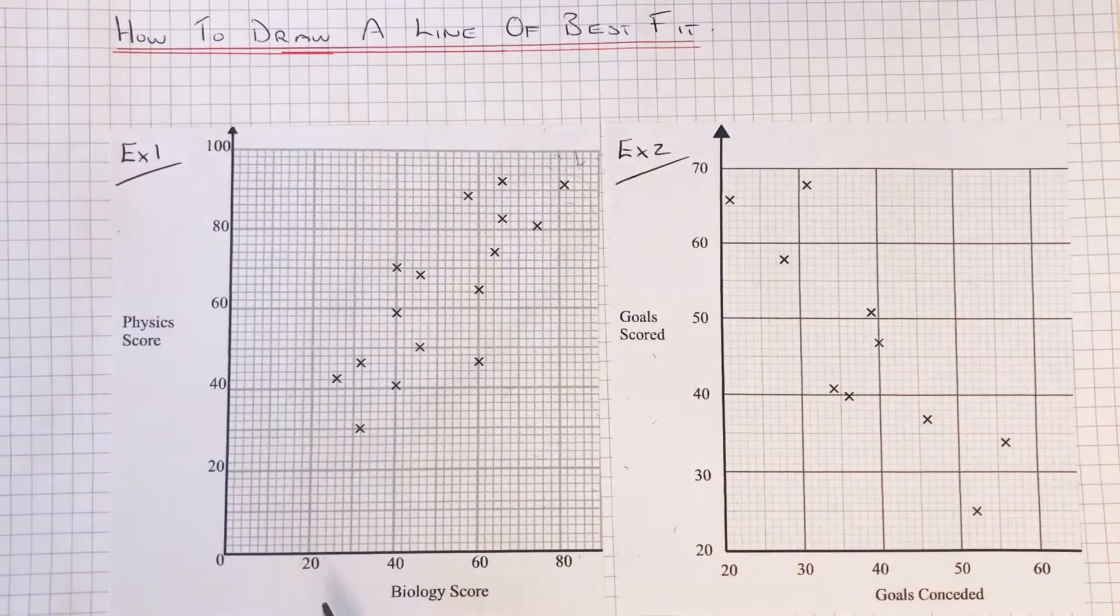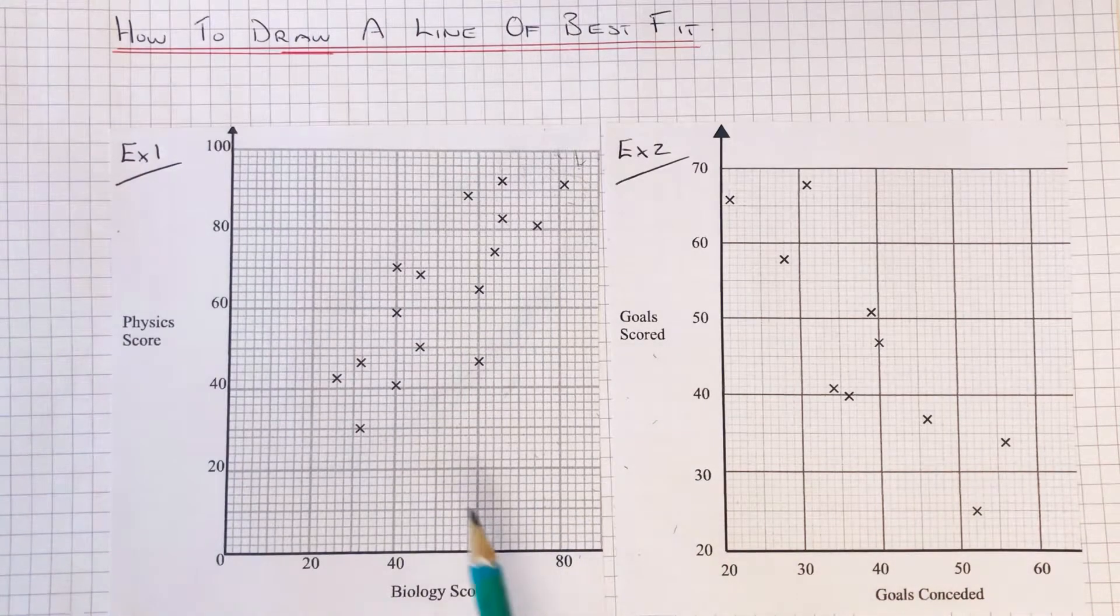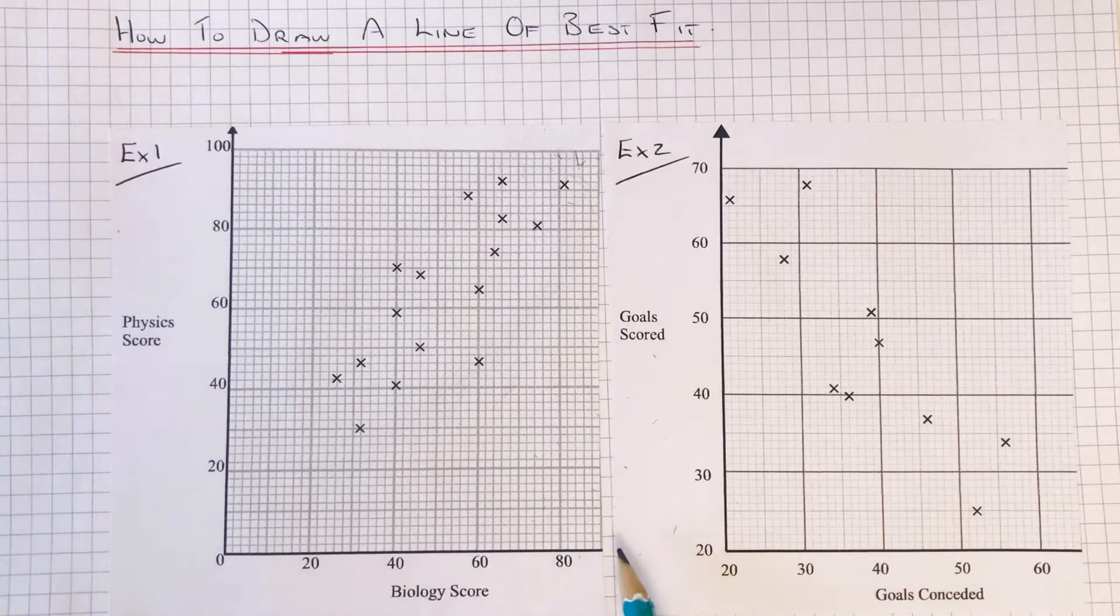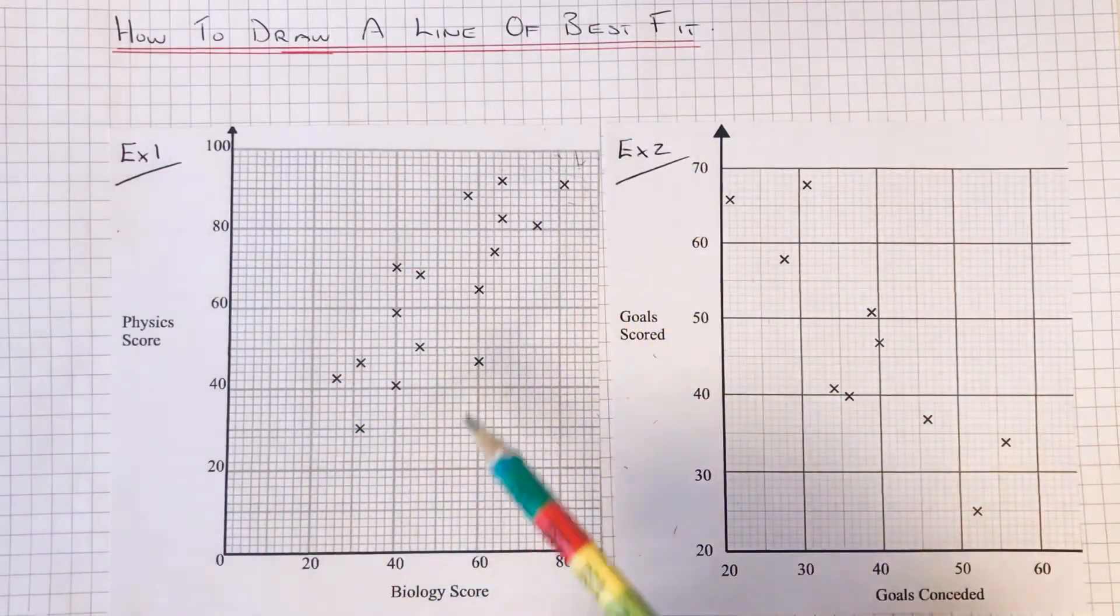On the first example, we have the biology score and physics score of a number of students. As you can see, as the biology scores get higher, so do the physics scores. So we're going upwards here.